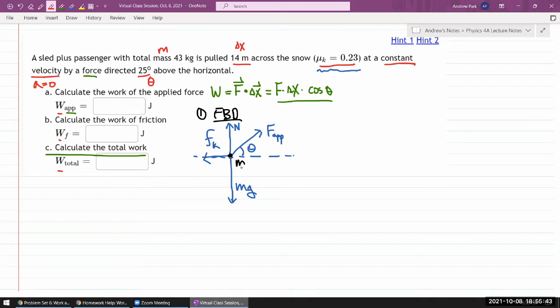Now step number two, I need to choose my coordinate axis, and I think with acceleration being zero, I'm just going to keep it simple, use a straight axis. That also means I only have to break down one force, the applied force.